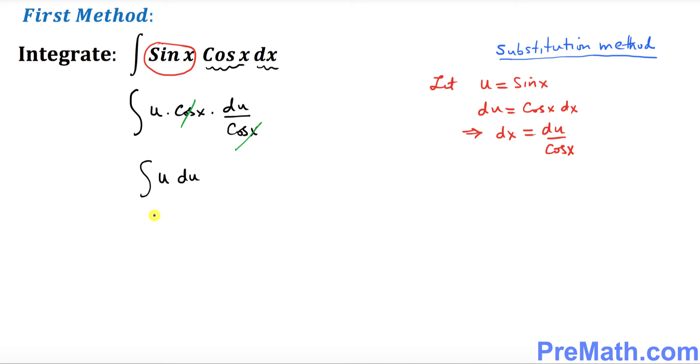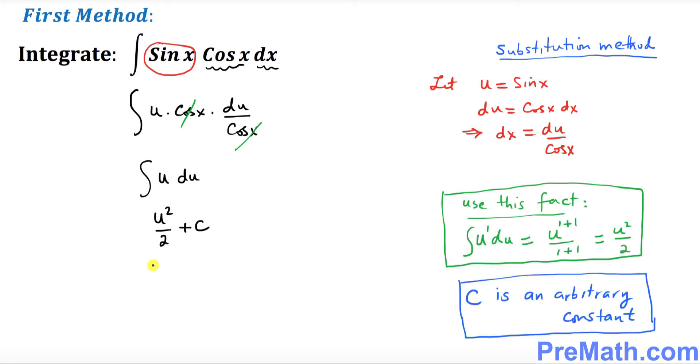So that's going to be equal to u squared over 2 plus c, where c is an arbitrary constant. And finally we're going to go ahead and plug u back. So u was sine of x. So this is going to become sine of x squared over 2 plus c and that is our answer.